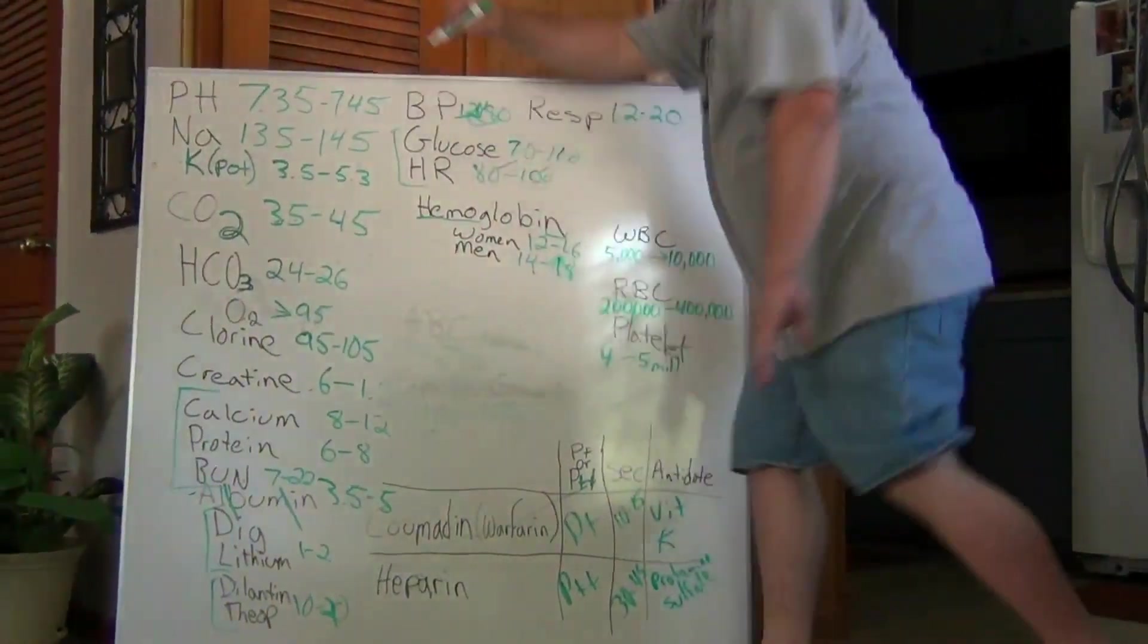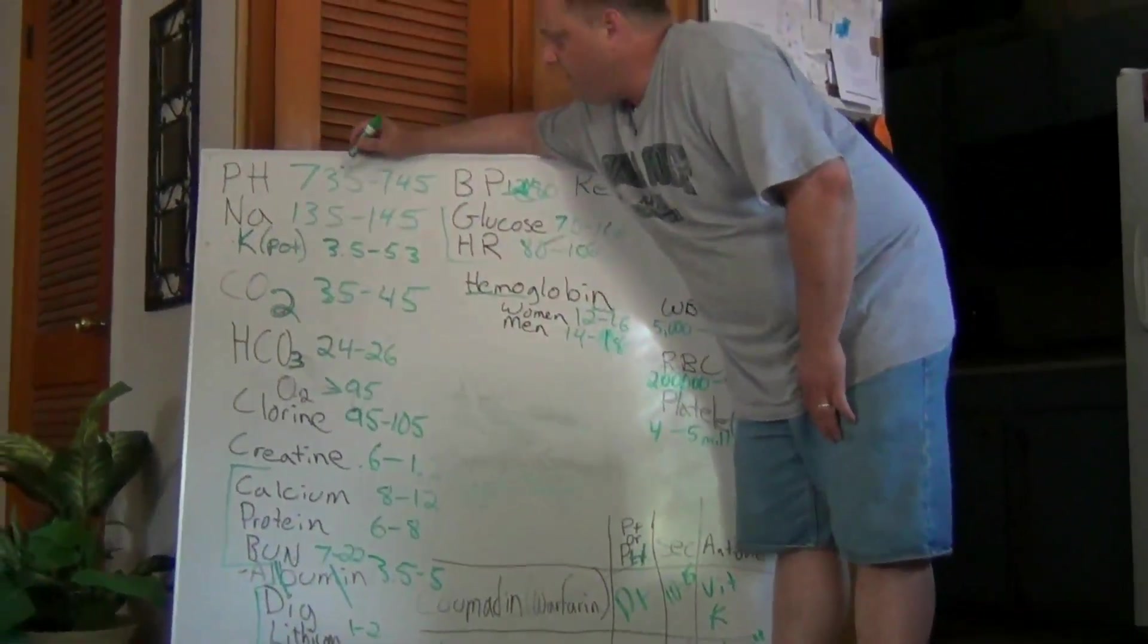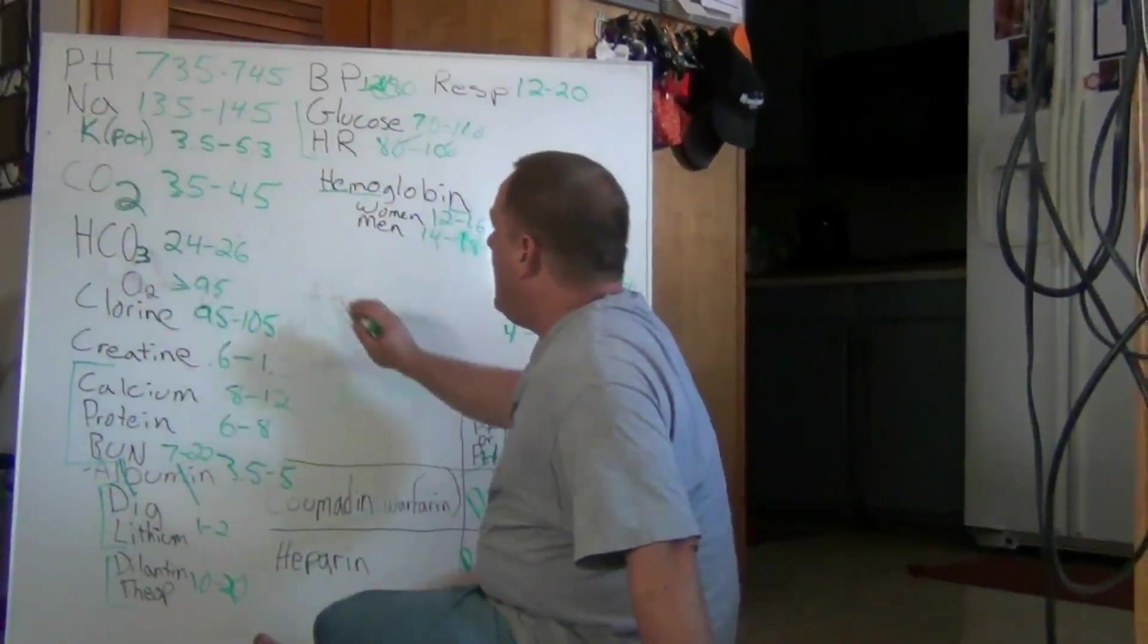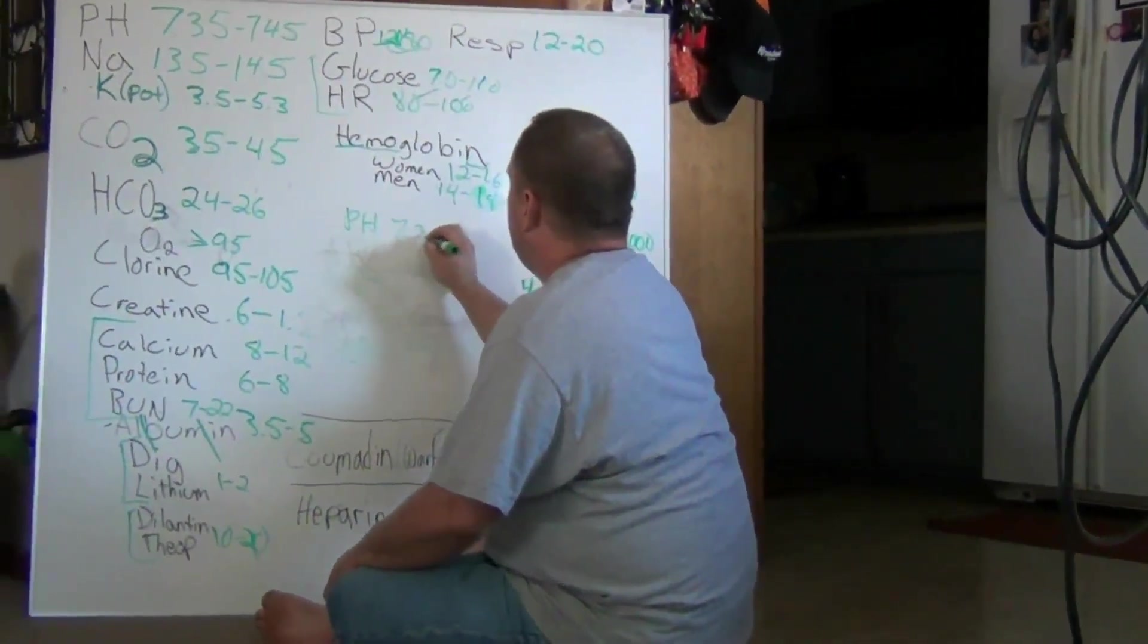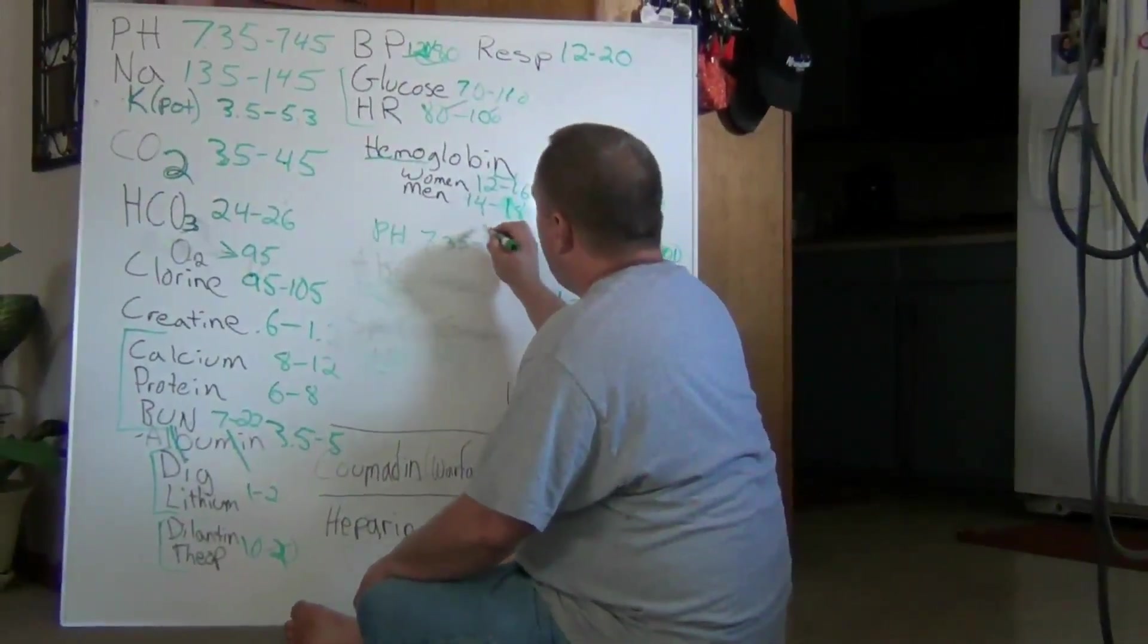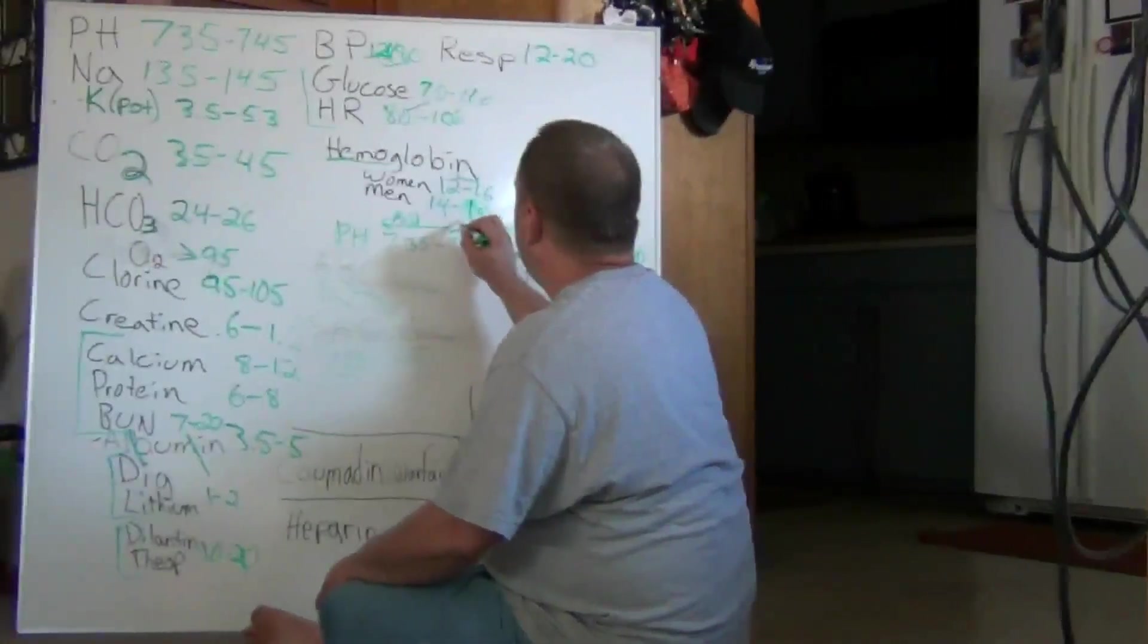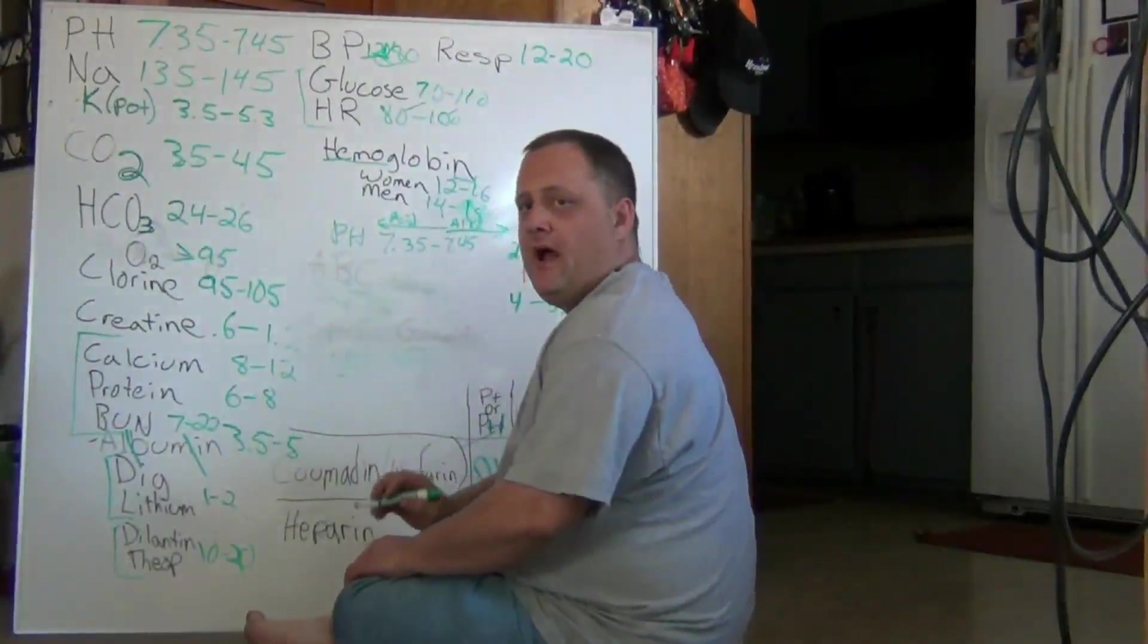Once you go lower on pH, you'll go, it gets acidic. You're, you become more acidic. When you go higher on your pH. Once you go lower, you go acidic. When you go higher than 7.45, you go more alkaline.